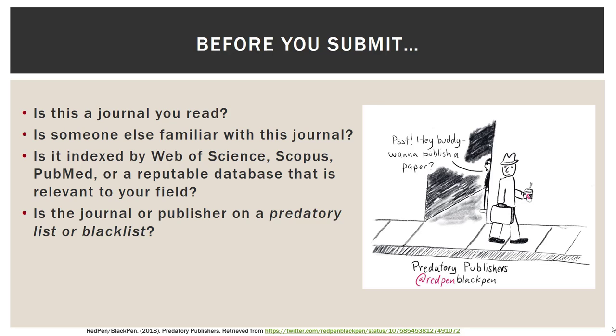So you have your list of criteria. Before you submit, you should ask yourself some questions: Is it a journal that you read? If you don't read it, is someone else familiar with the journal — a colleague, co-worker, mentor, or supervisor? Depending on your discipline, is it indexed by one of the big reputable databases like Web of Science, PubMed, or Scopus? And is the journal or publisher on some type of predatory list or blacklist? Again, one of these might not make your decision, but when you start adding them all up, that'll help you get to a better place for evaluation.